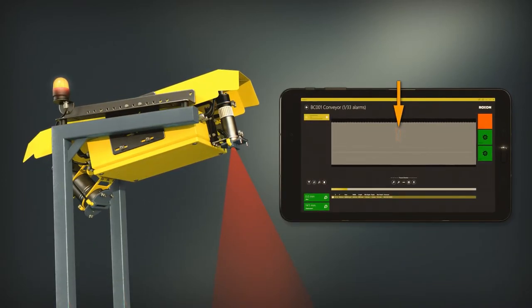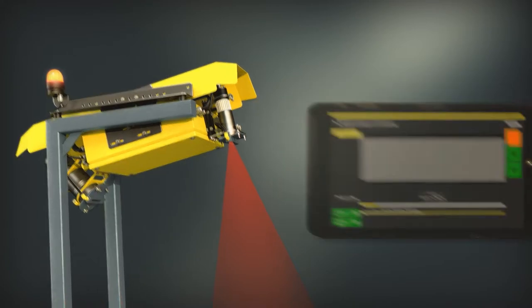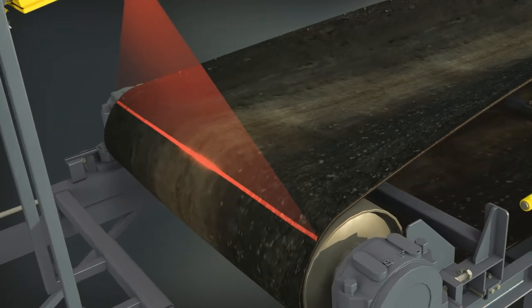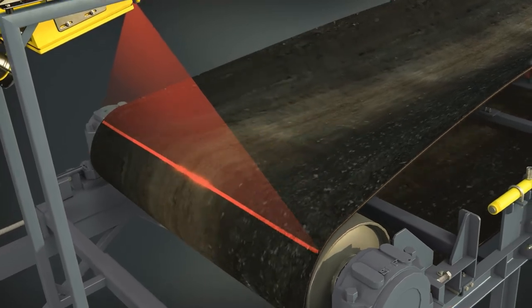HX170 keeps an eye on the condition of the upper side of the belt. This includes the detection of damages such as cuts, gouges, open splices, holes, and others.